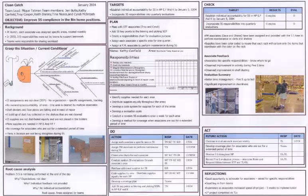So at launch each associate was assigned specific casts rotated monthly, but in 2003 5S responsibilities were set by teams to support teamwork but it wasn't being done. And so the first thing the team did was they did a fishbone analysis or the five whys and so they wanted to better understand or grasp the situation.